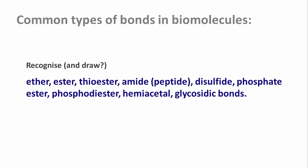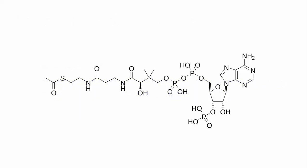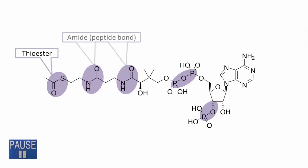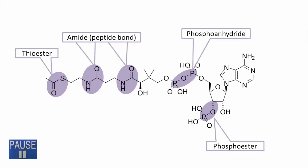Let's have a look at a complex molecule again: acetyl coenzyme A. Do you recognize the types of covalent bonds or linkages here? Press pause if you want to have a go yourself. Do you recognize all the bond types? Well done. In case you're wondering, the amide bonds you see here are peptide bonds because this molecule has been assembled by condensation of amino acids, even though these are actually quite difficult to recognize as amino acids in this structure. So don't mind — if you said amide or peptide bond, it's all good.